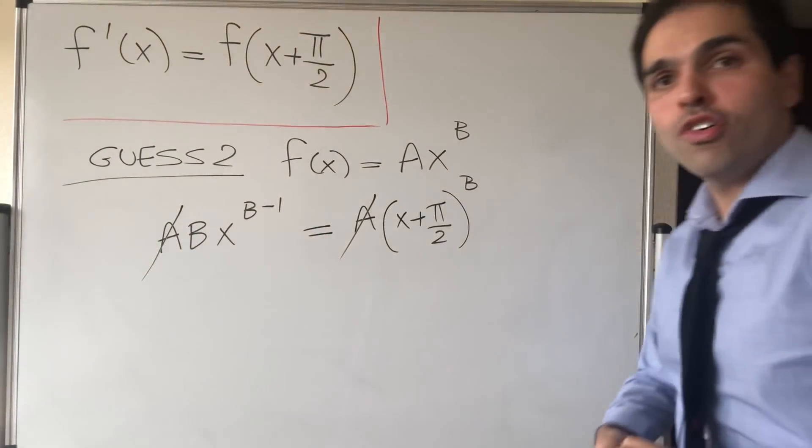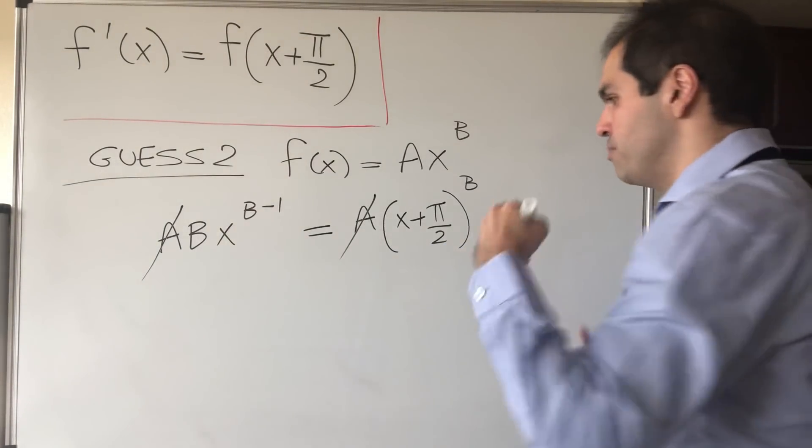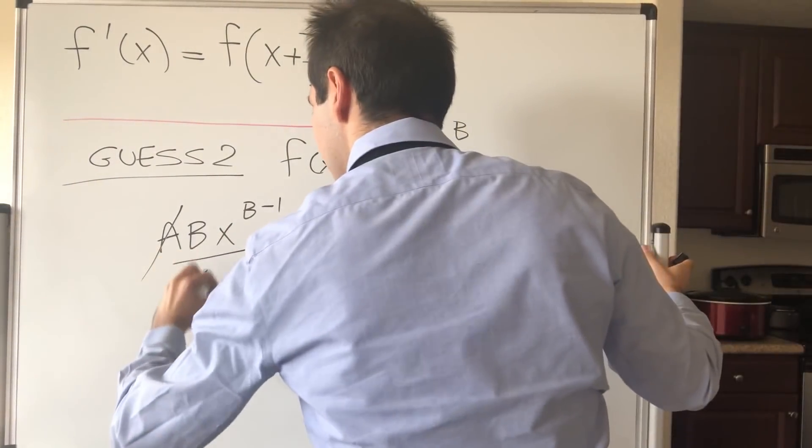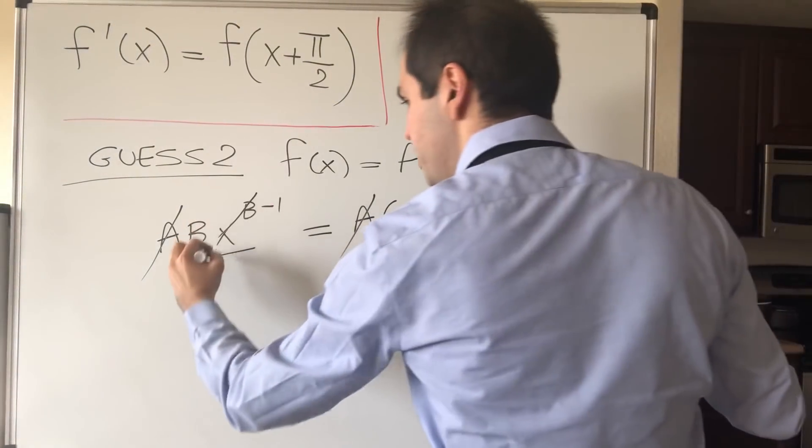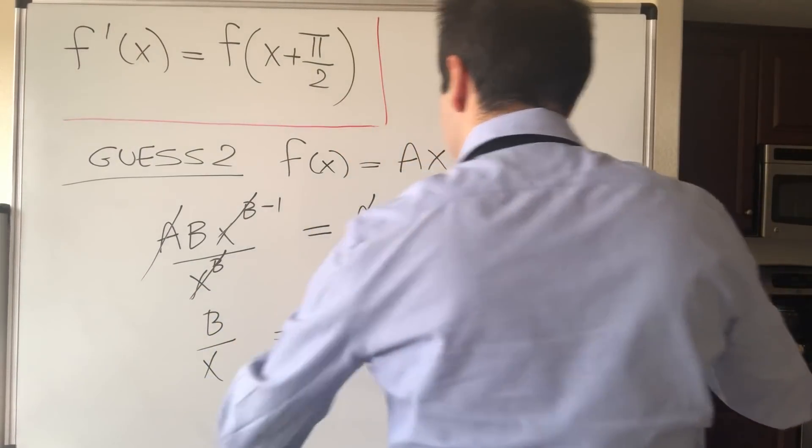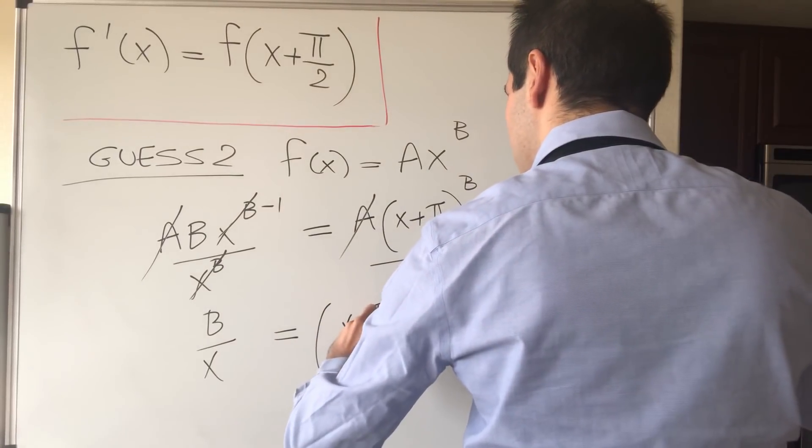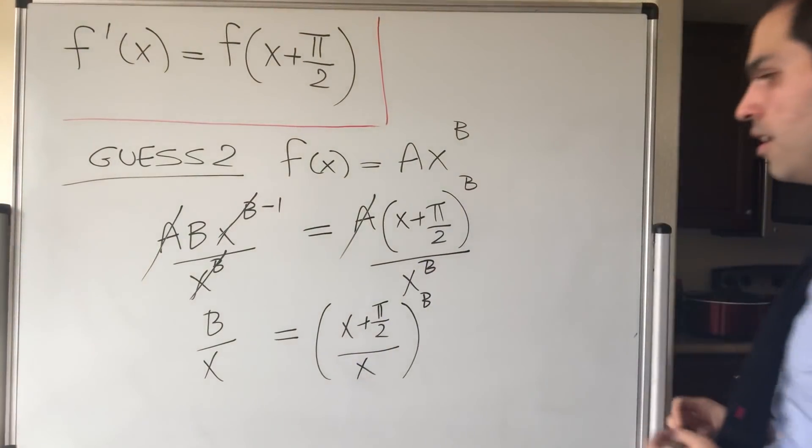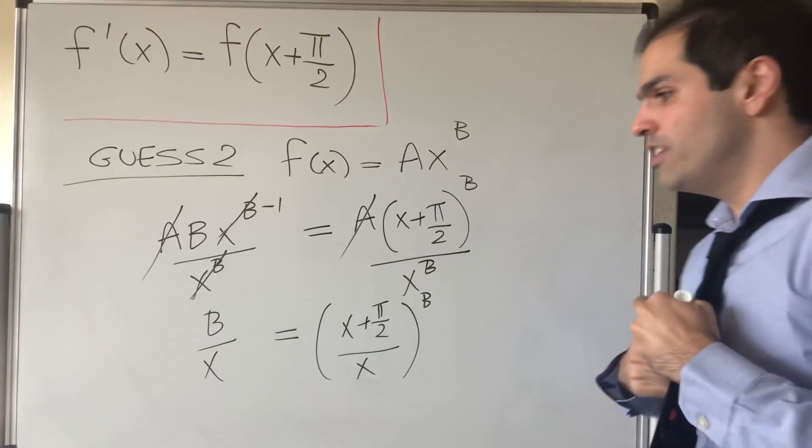And moreover, here's a neat little trick if you'd like: divide both sides by x^B. Then what this becomes, well the x^B here cancels out and you're left with B/x. And on the other hand here you get (x+π/2)^B / x^B. However, what happens here, here's a trick: let x go to infinity.